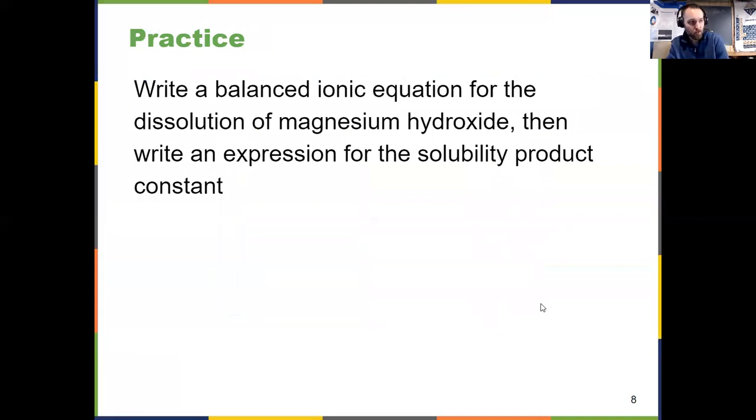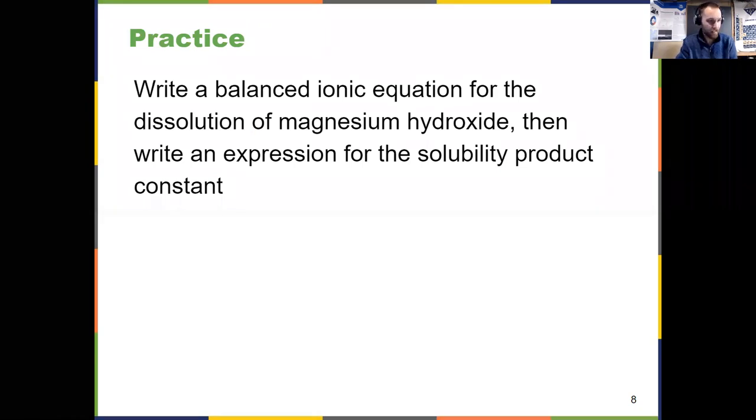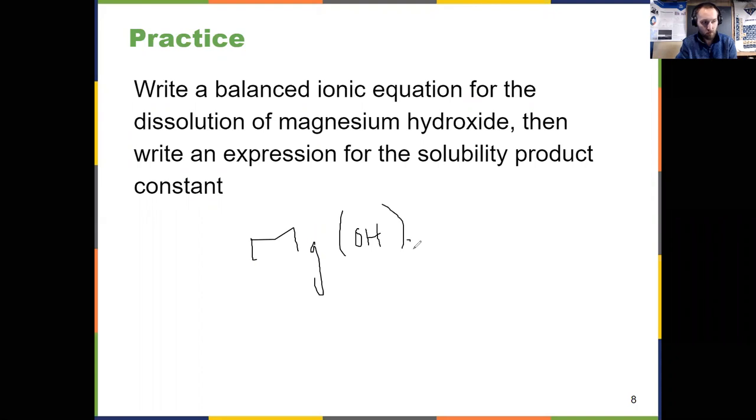You should know how to write equations and equilibrium expressions, how to solve for a KSP. This ties together a lot of ideas. Nomenclature from way back in Chapter 2. What is magnesium hydroxide? Well, you have to know that it's not just MgOH, because it is a group 2 ion. Mg is plus 2. Hydroxide, OH, so it's Mg(OH)2. That's magnesium hydroxide.